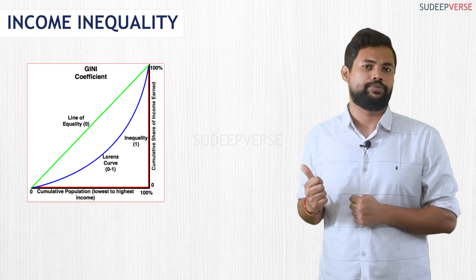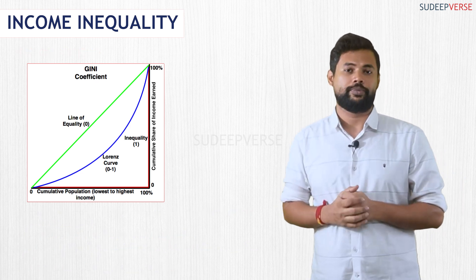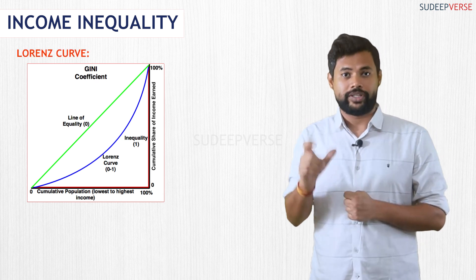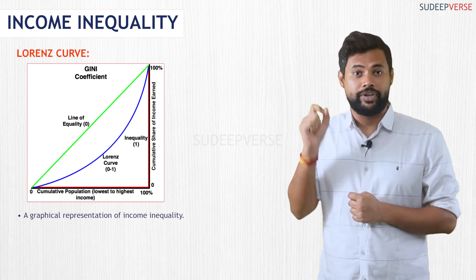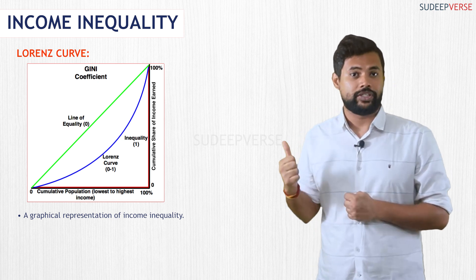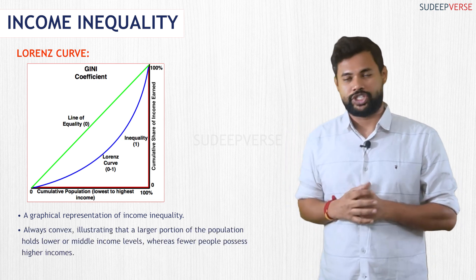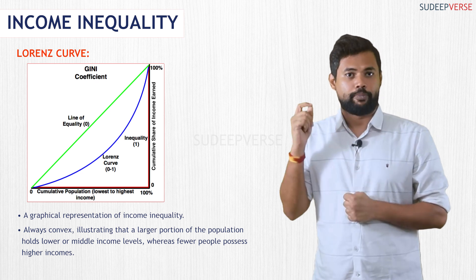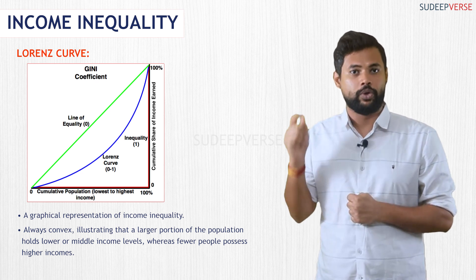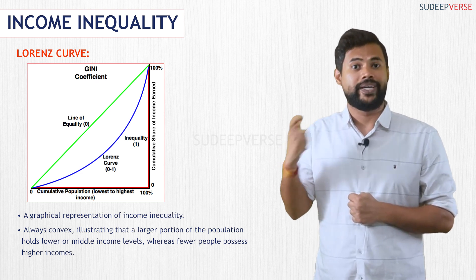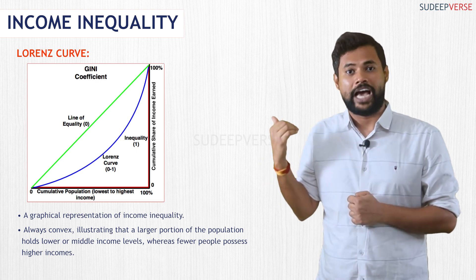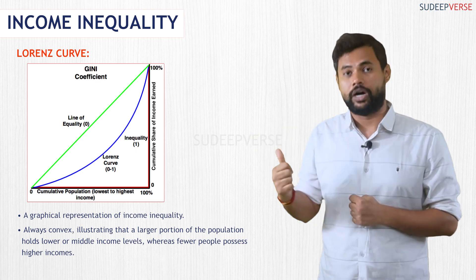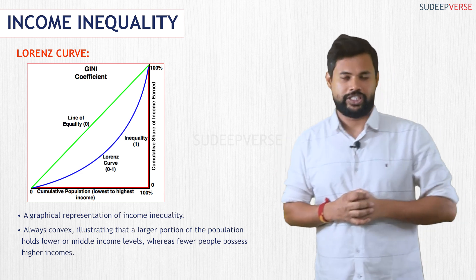Now if you also observe the Gini coefficient, you will see something called the Lorenz curve. The Lorenz curve is a graphical representation of income inequality and it will always be convex shaped. The reason it is convex shaped is because the proportion of population having low or middle income will always be greater, and the proportion having high income will always be lesser. Hence the Lorenz curve will always be convex shaped.